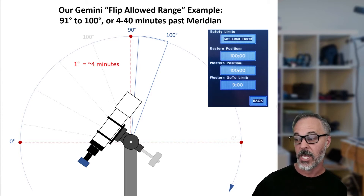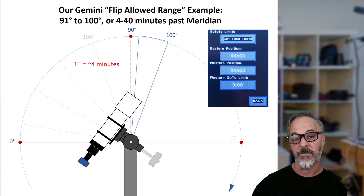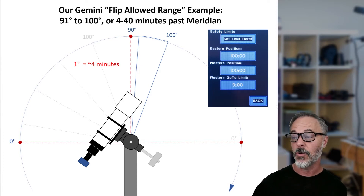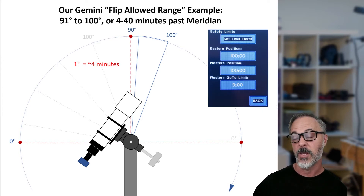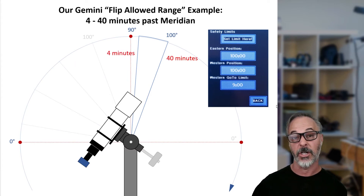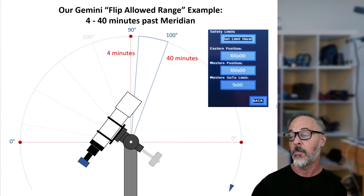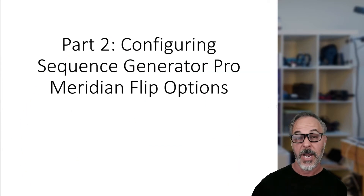Looking at the example from the last video: we had a western position of 100 degrees, which is 10 degrees past the meridian. Our western go-to limit was defined as 9 degrees back towards the meridian. Based on those calculations, we had a flip allowable range of 91 to 100 degrees — or in clock terms, about 4 to 40 minutes past the meridian. So we want Sequence Generator Pro to request the flip within that range of 4 to 40 minutes past the meridian.